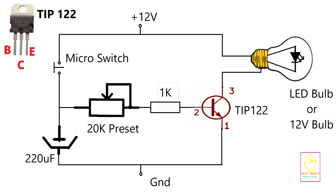That is why the transistor will always be in the off position. One end of the micro switch is connected to the +12 volt power supply. When we press the micro switch the capacitor will start charging. Once the capacitor charge becomes full, it will flow through the 20k preset and 1k resistor and reach the base. Now the base-to-emitter junction becomes forward biased and the transistor will switch on. We momentarily press the micro switch and release it. Now the positive supply will not reach the base through the micro switch, but the capacitor is in the charged position, so it will slowly discharge through the 20k preset and 1k resistor to the base-emitter junction.